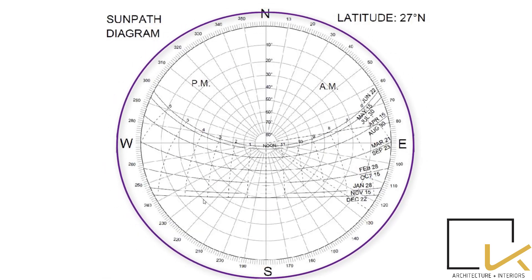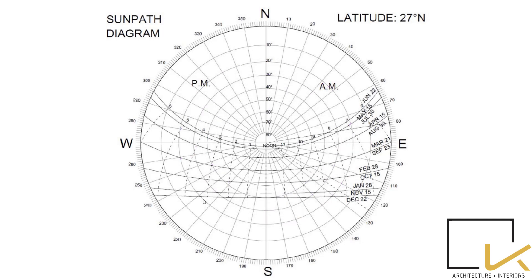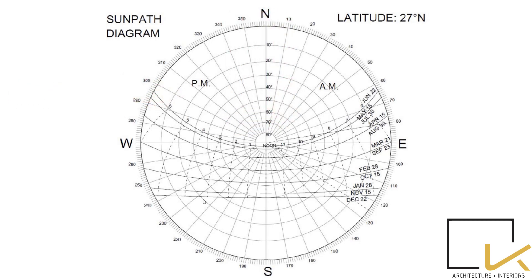The angles at the circumference denote azimuth angles. The concentric circles denote altitude angles, which increase as we approach the center. The horizontal arcs represent the months, and the dotted vertical arcs represent the time lines starting from sunrise till sunset. Note how the arcs change for each month.